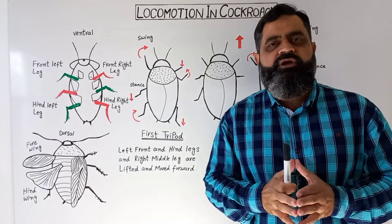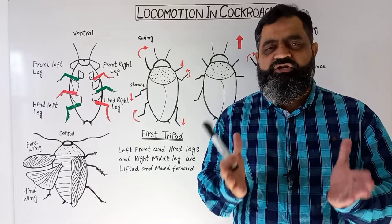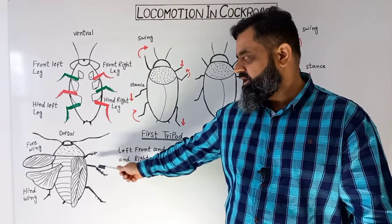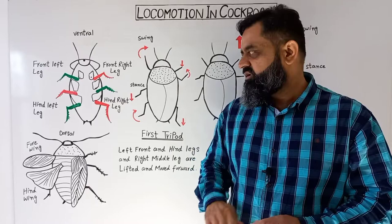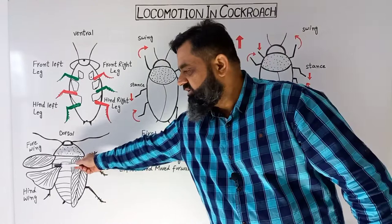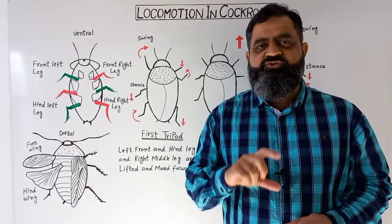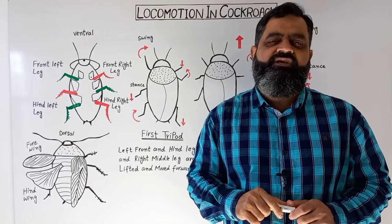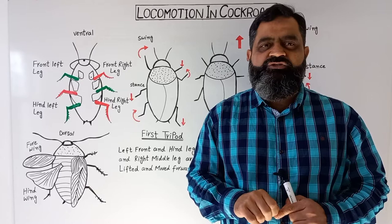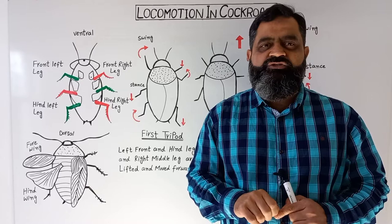When there is a predator behind the animal, the cockroach can run and also fly a short distance, which is known as gliding flight. During gliding flight, while still running, it lifts its first pair of wings — the forewings — and uses the second pair of wings, the hind wings. Just like a bird or butterfly, it swings its wings and makes a short flight. I hope this makes sense. I'll see you in the next lecture — bye.